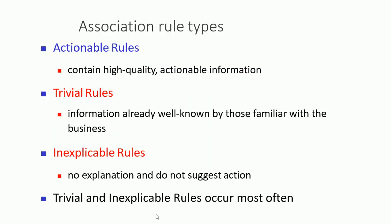There are three types of rules. First, inexplicable rules — these contain information that is already well known; it doesn't make sense to find that information because it is already expected. Expectable rules: if you have no explanation and it makes no sense, those fall into this category as well.